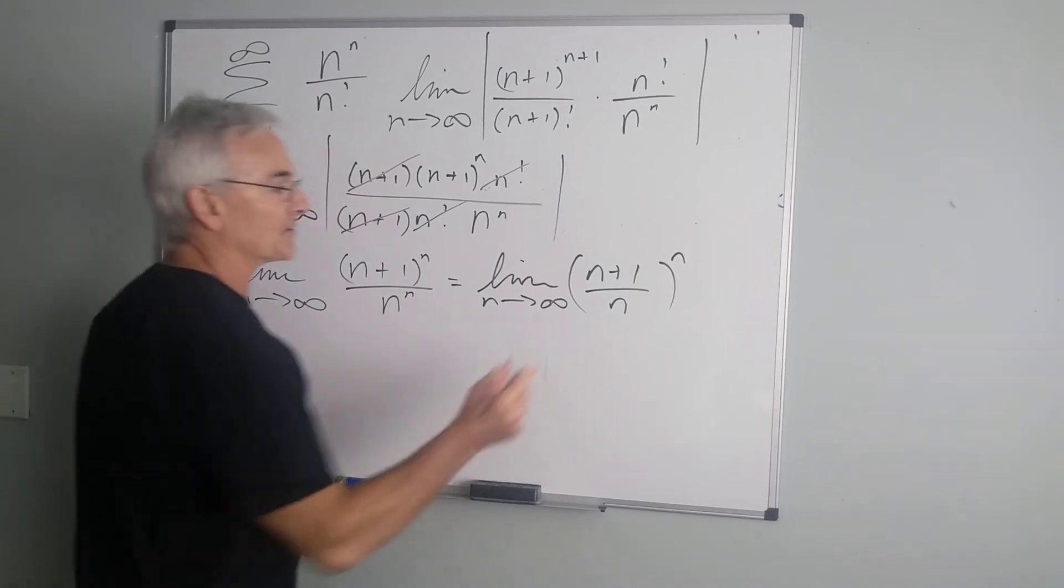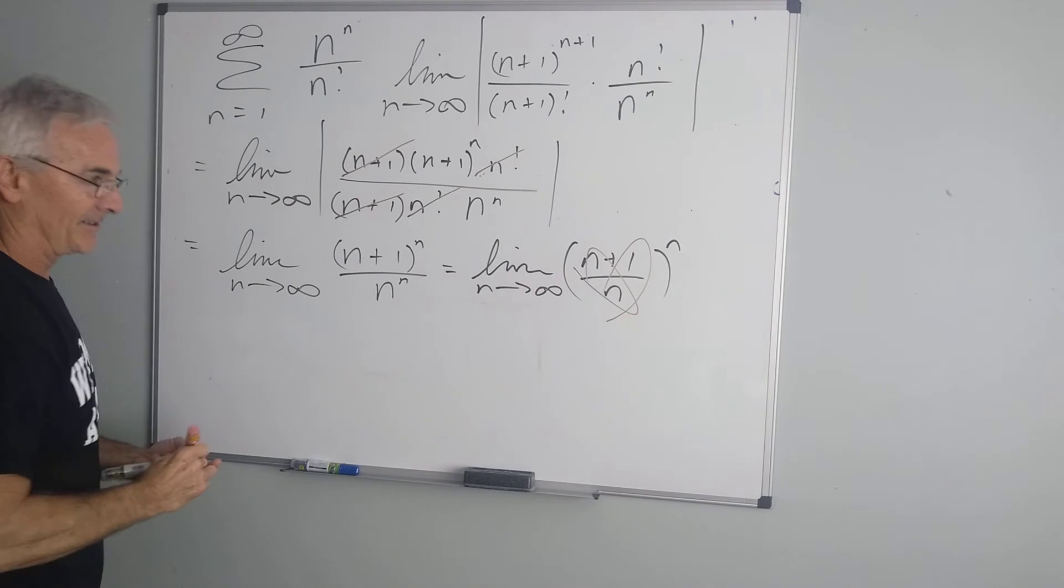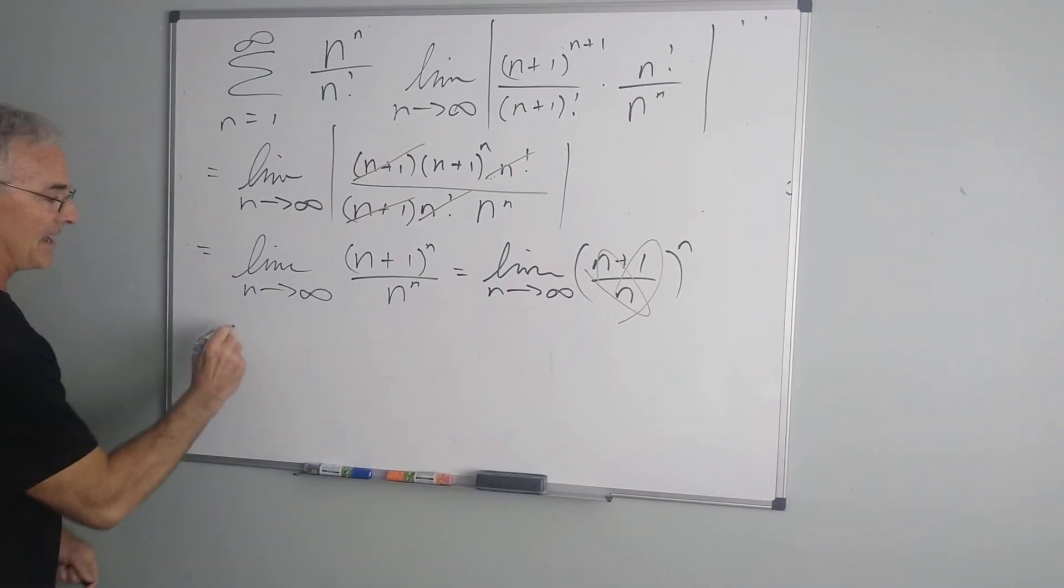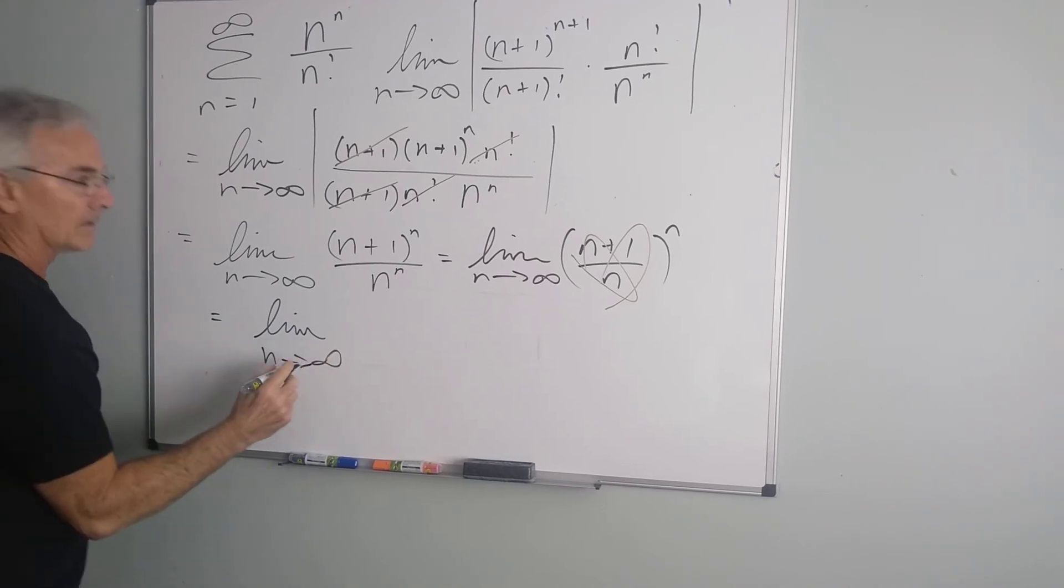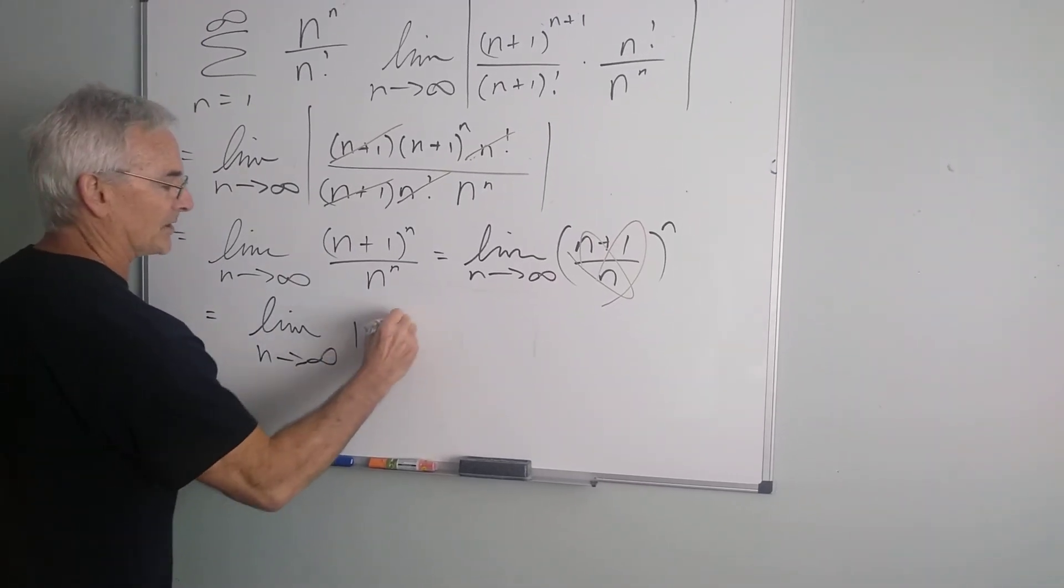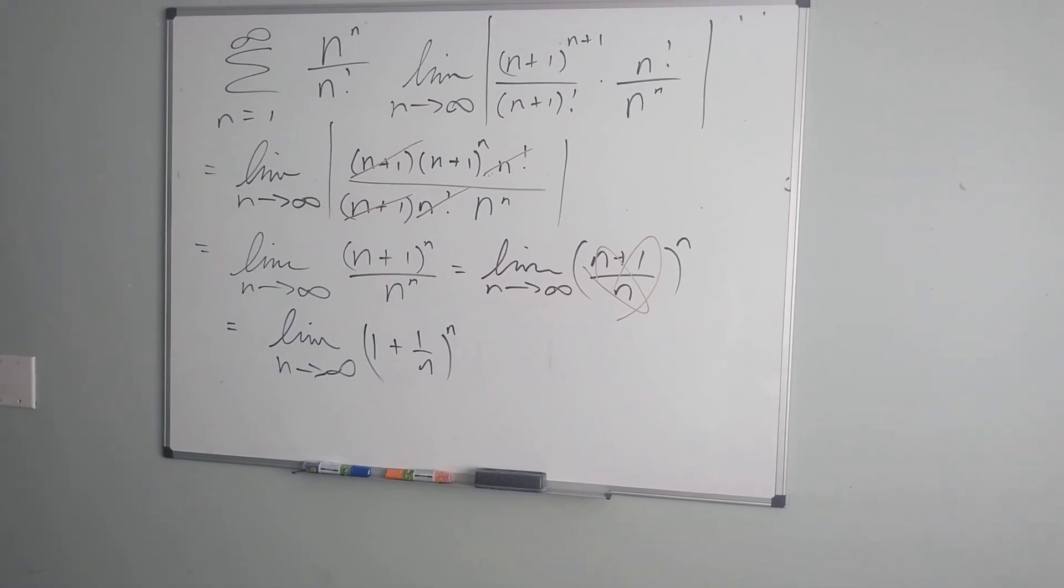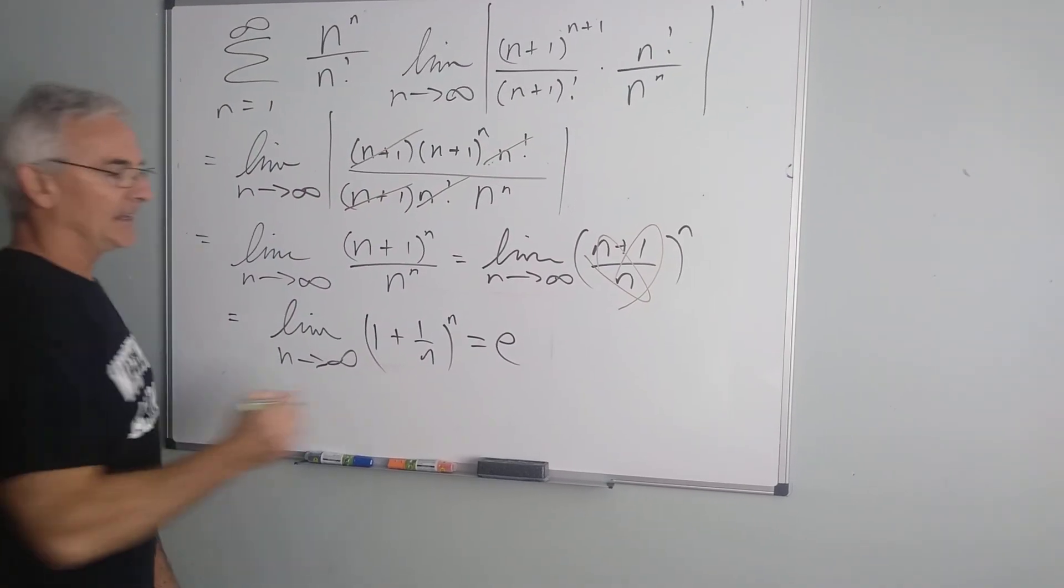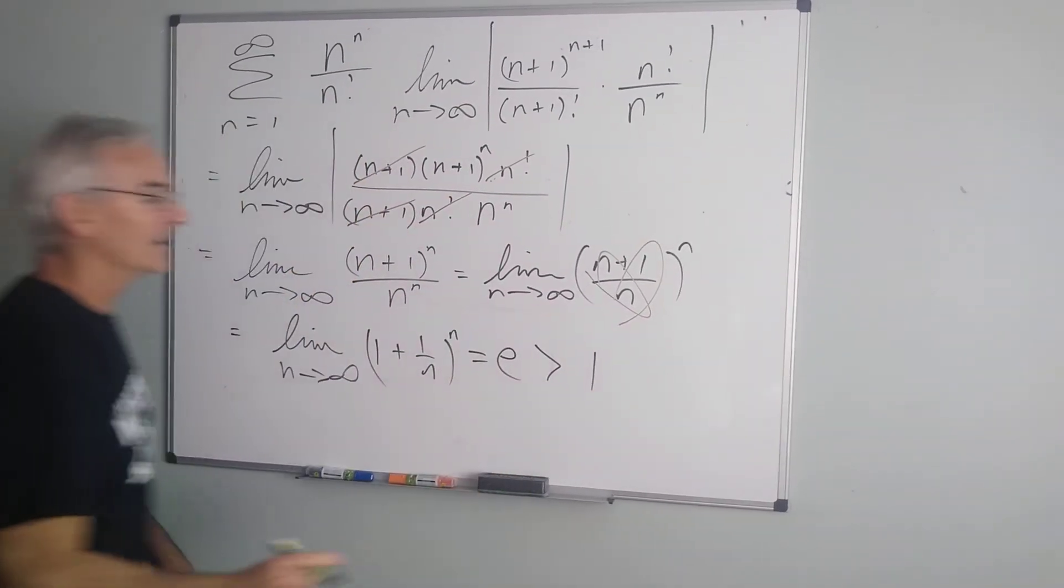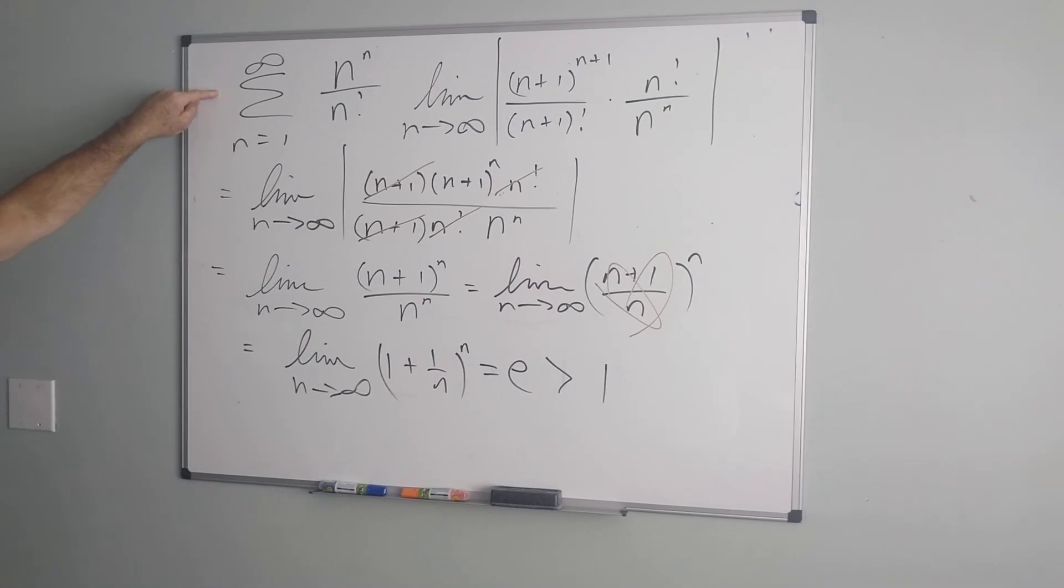Now, within this quotient, I can pull it apart, as we often do in class, and that will leave me with 1 plus 1 over n to the nth power, which we should recognize this is the value of e. And since e is greater than 1, this series right here will diverge by the ratio test.